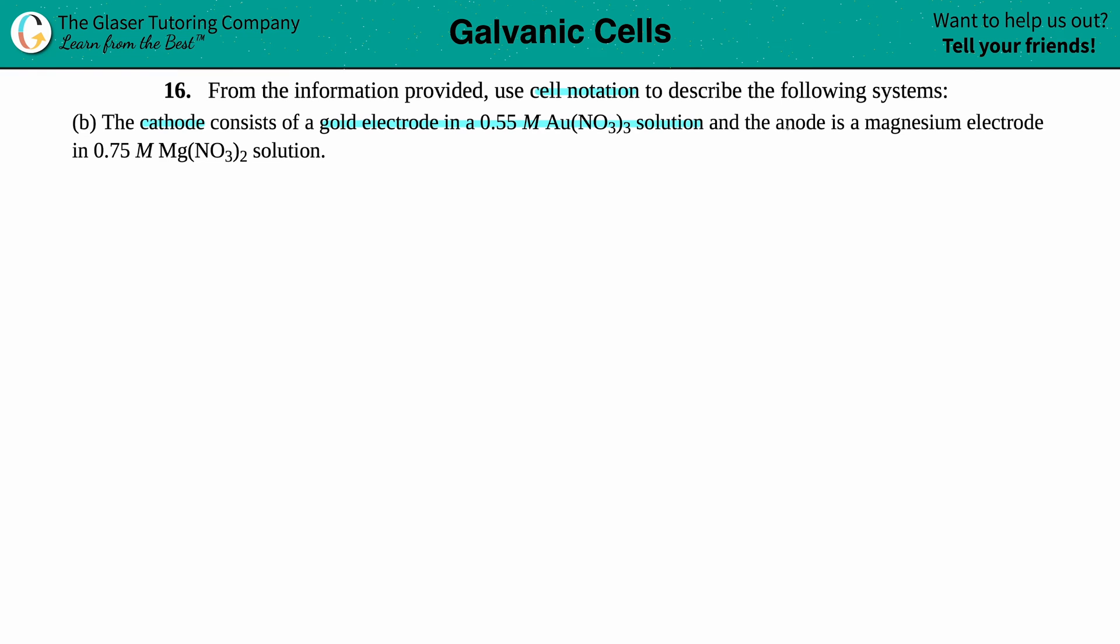And the anode is a magnesium electrode in 0.75 molarity Mg(NO3)2 solution. They're talking to us in terms of cathode and anode, which always goes back to oxidation and reduction reactions. We have changes in oxidation states, the charges. That's what a redox or oxidation reduction reaction is.